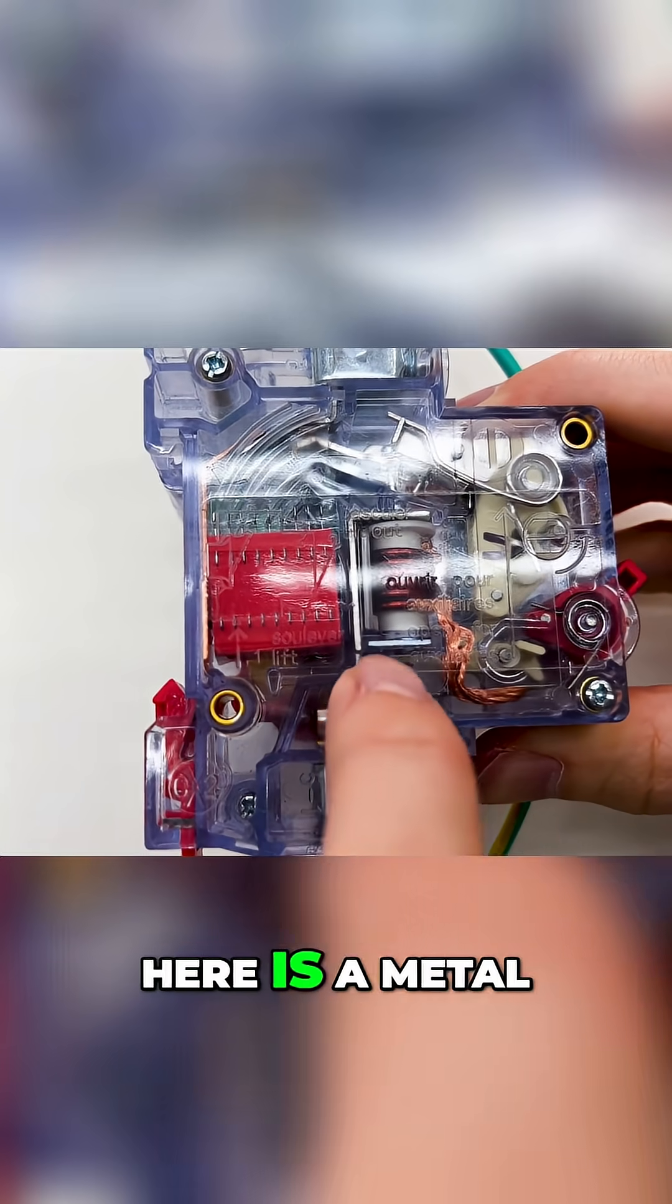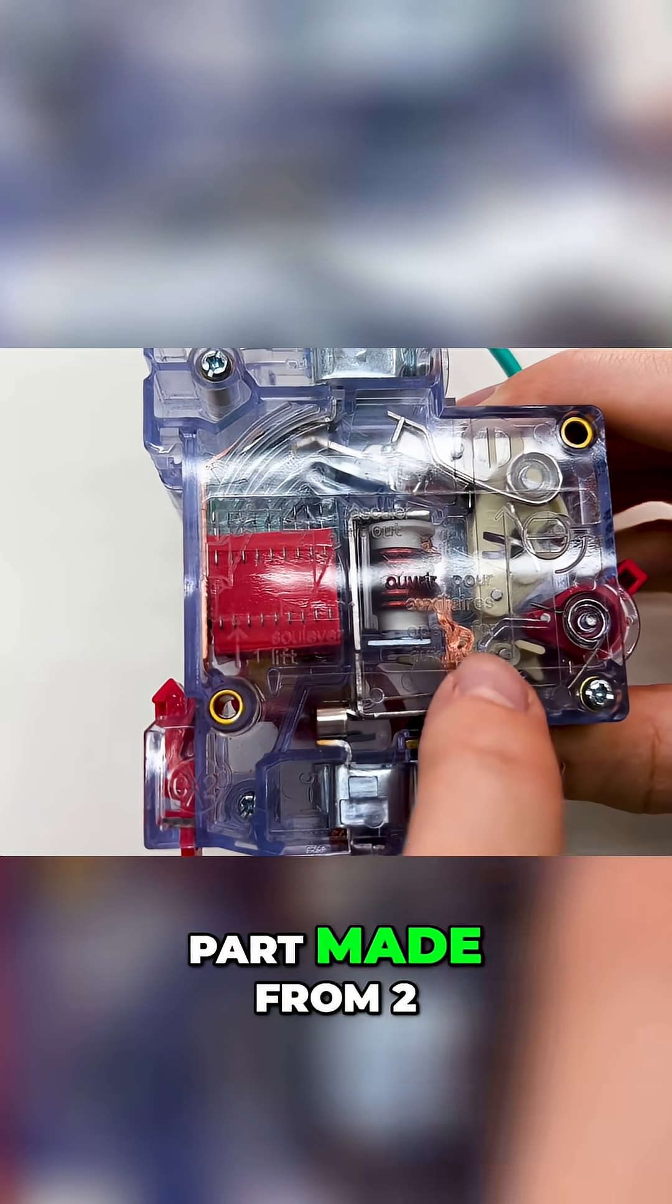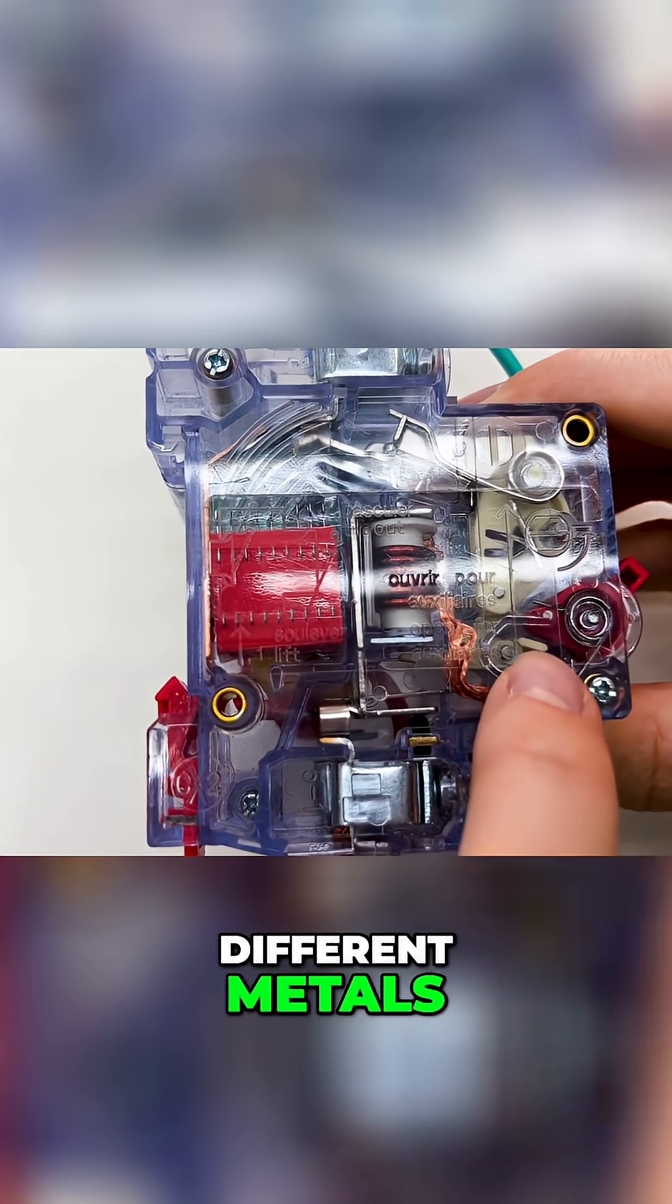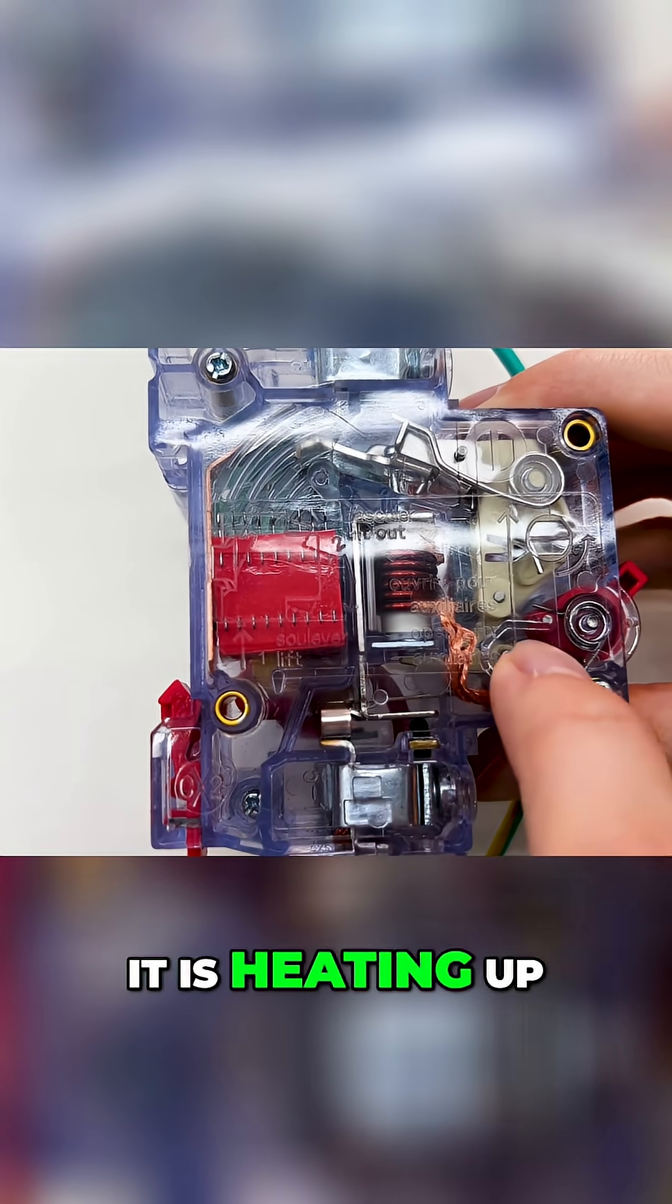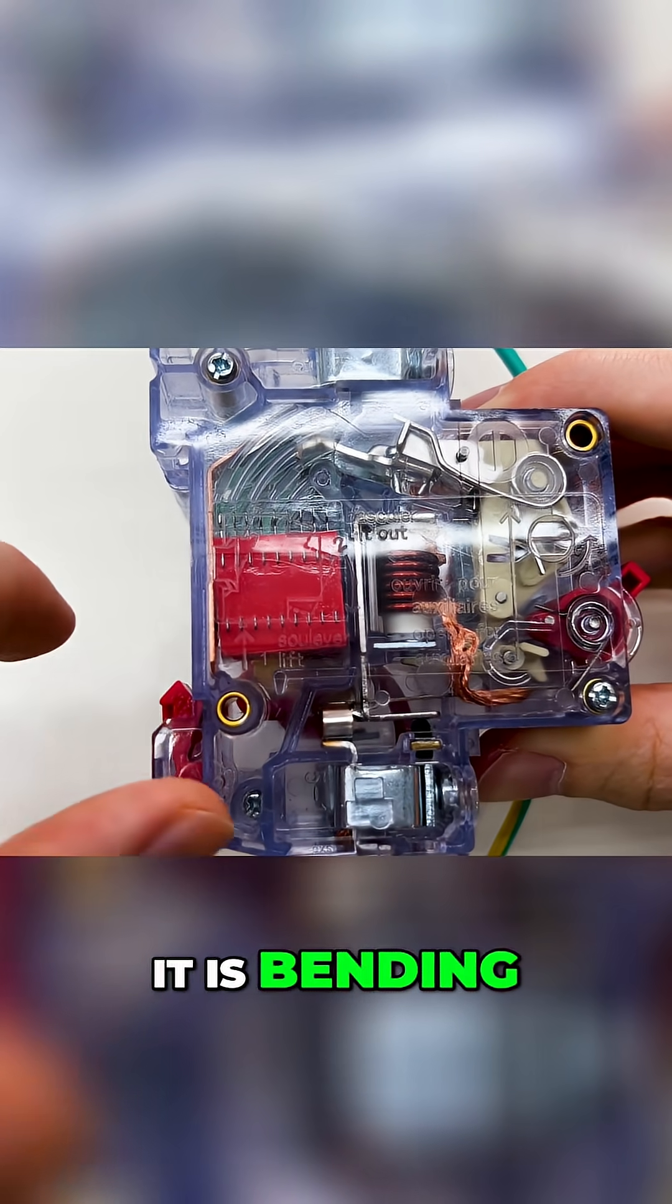On the bottom, here is a metal part made from two different metals. And if the current is too big, it is heating up. And when it is heating up, it is bending.